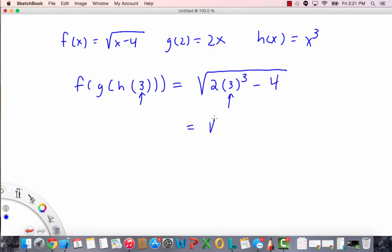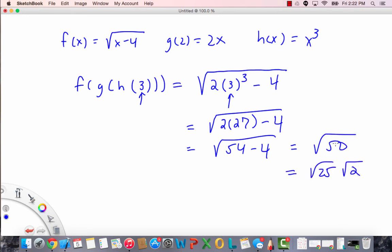Because x is now 3. 2x cubed minus 4, which is root 2 times 27, 3 cubed is 27, minus 4, which is root 54 minus 4, which is root 50. And let's keep going. Let's simplify this as much as possible. Root 50 is root 25 times root 2, which is 5 root 2.